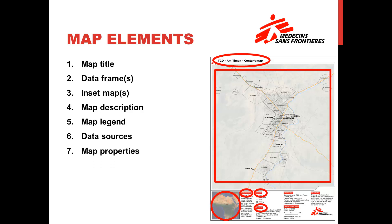7. Map properties. Map properties include document name, creation date, author, print format, and confidentiality. Precisely what the map on the right's properties section conveys.